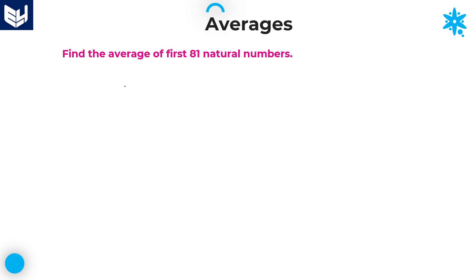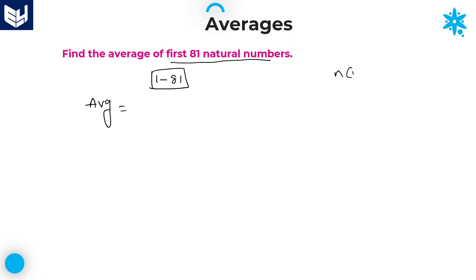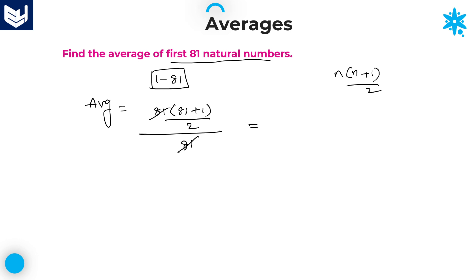Let's move on to the next question. Find the average of first 81 natural numbers, which is 1 to 81. Average equals the sum of 81 natural numbers divided by 81. As we know, the sum of n natural numbers is n(n+1)/2. Here n=81, so it is 81×82/2 divided by 81. The 81 gets cancelled, leaving 82/2, which equals 41. That is the required answer.